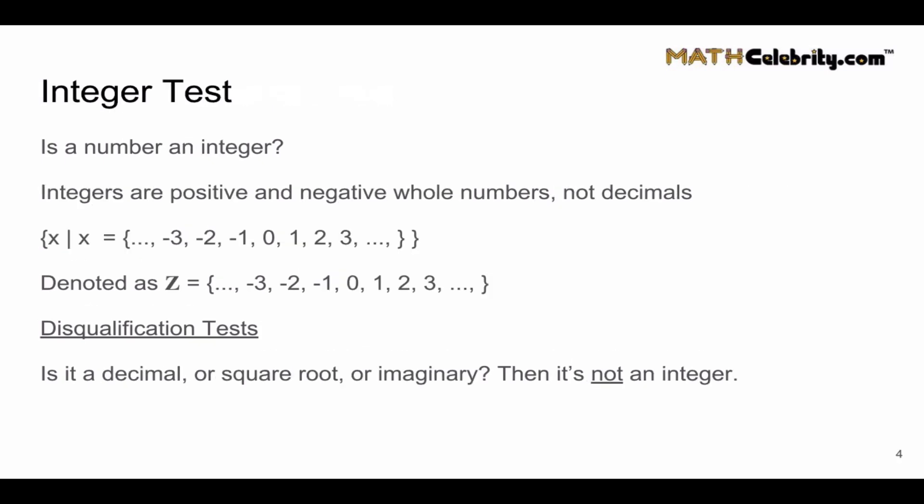Next let's do the integer test. Integers are positive and negative whole numbers, not decimals. We've got this set notation: {x | x = {..., -3, -2, -1, 0, 1, 2, 3, ...}}. We denote this with the special ℤ symbol to tell you that yes, this is the set of integers.